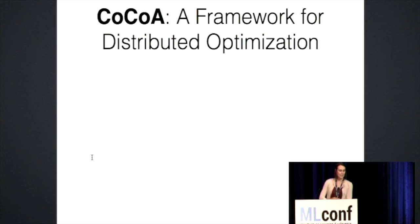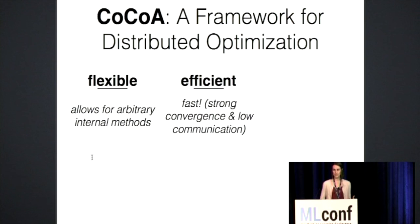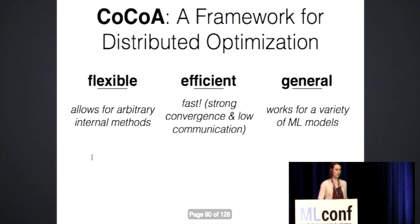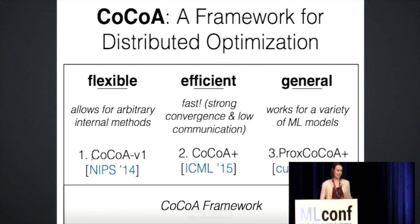So let me just summarize again by saying CoCoA, it's a framework for distributed optimization. It's flexible, so in the first version of the framework, we developed this ability to have arbitrary internal methods. Since then, we've made it even more efficient with the CoCoA Plus work. It has very strong convergence guarantees, and it has strong practical performance with low communication. And in this most recent work, PROX COCO, we've shown that it now is applicable to a wide variety of very popular machine learning models. So these kind of correspond to these three separate pieces of work. And for ease of nomenclature, we're calling the entire thing CoCoA, which is all of these three separate things together. And we have a recent paper that kind of ties all this together and explains all of the applications together in one unified framework.